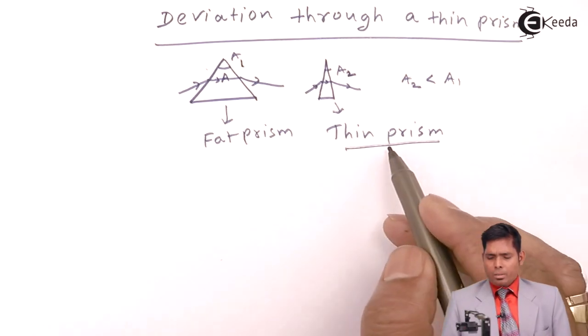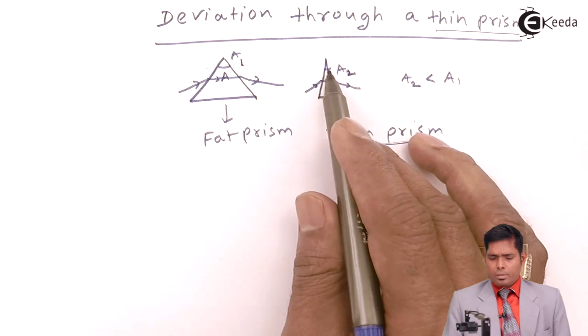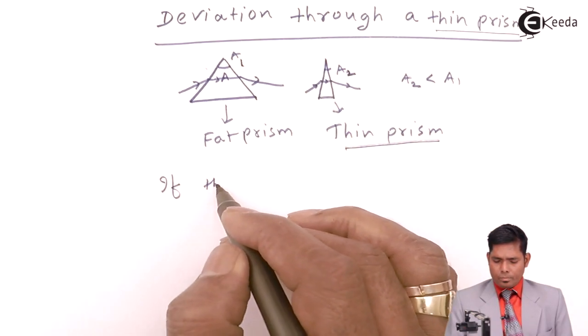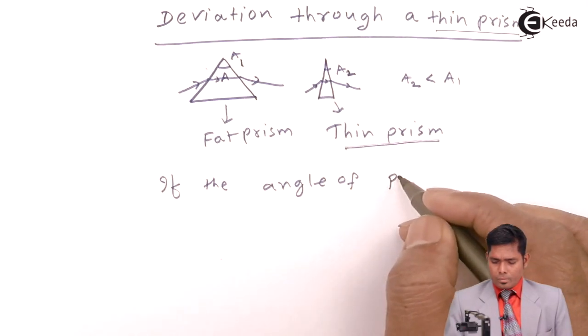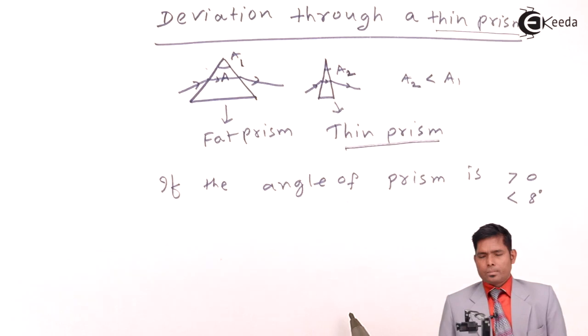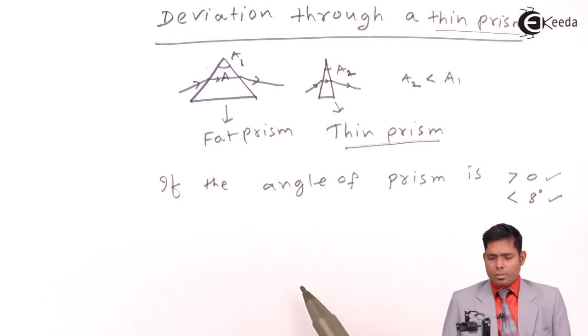So what is the basic definition of a thin prism? If the angle of this prism is greater than 0 but less than 8 degrees, then it is called a thin prism.